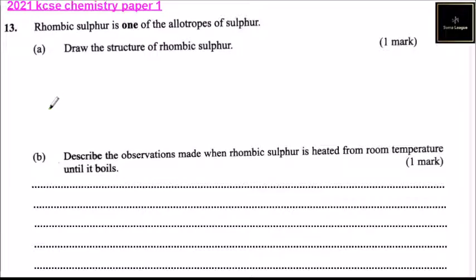Question number 13. Rhombic sulfur is one of the allotropes of sulfur. Draw the structure of rhombic sulfur.